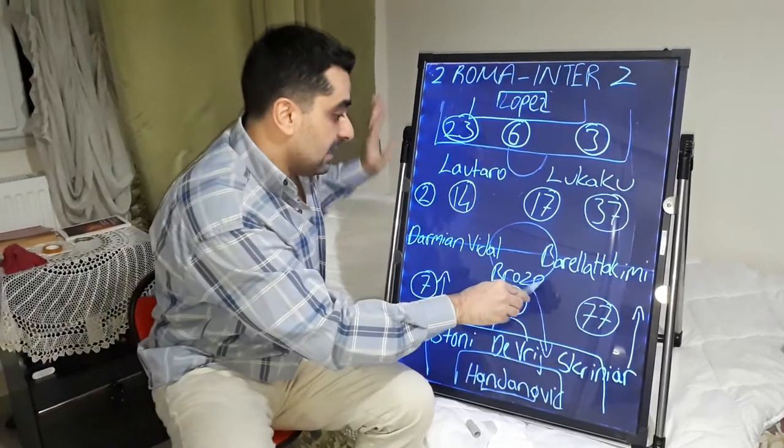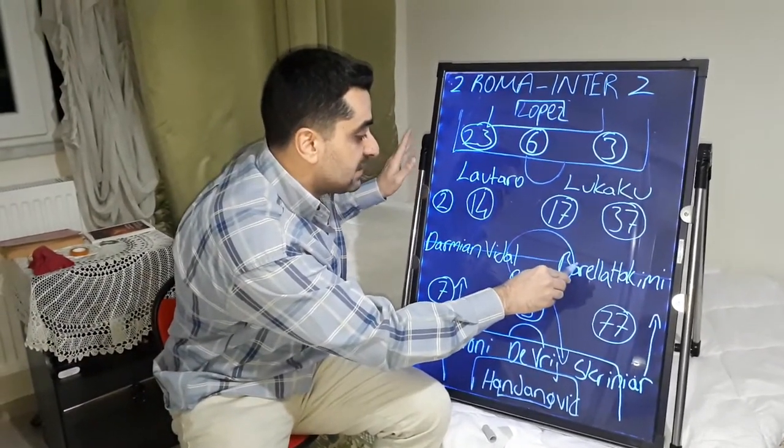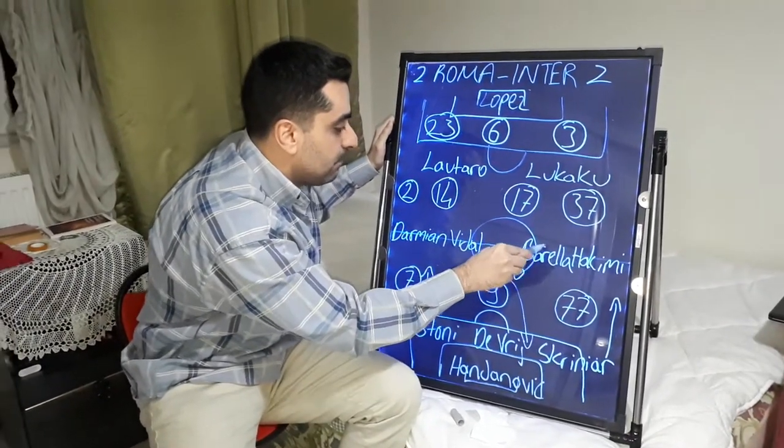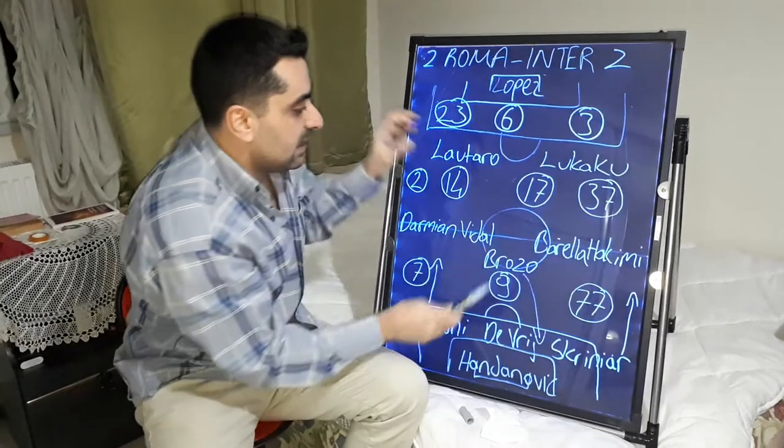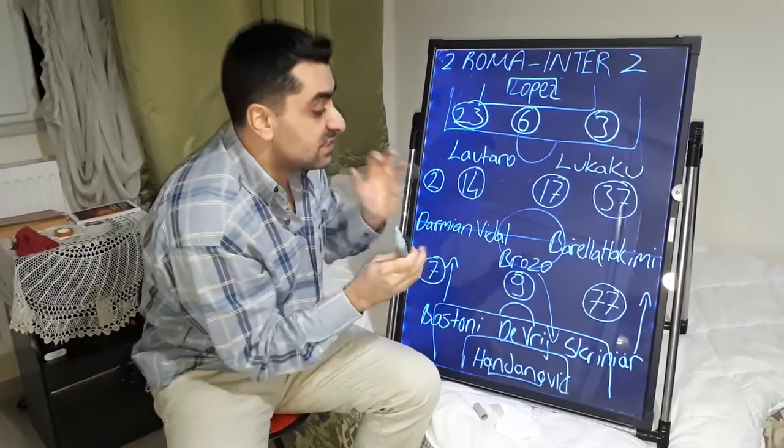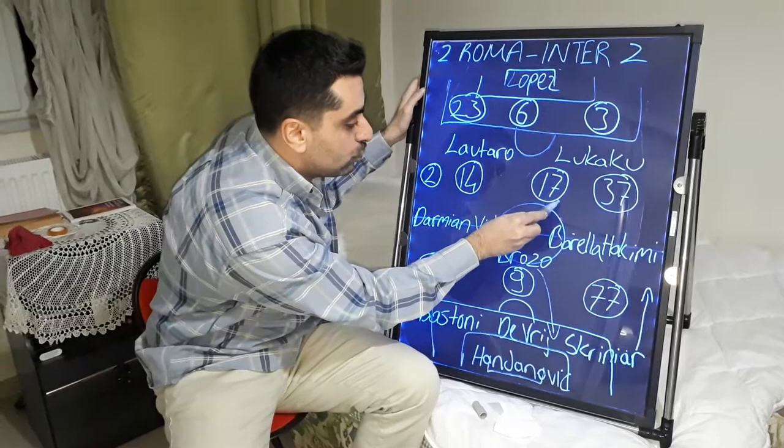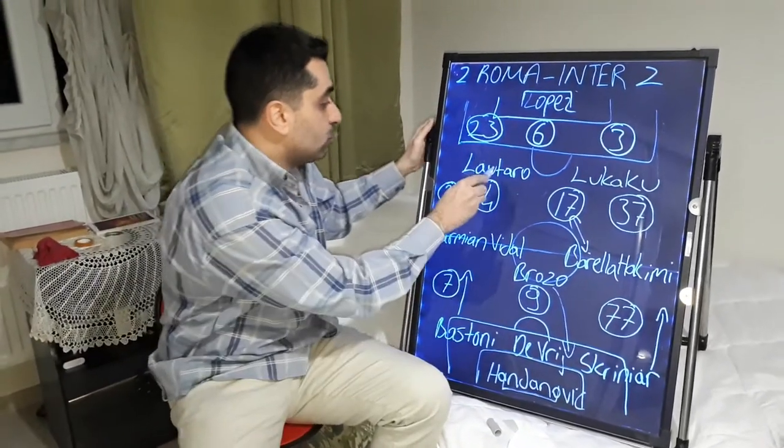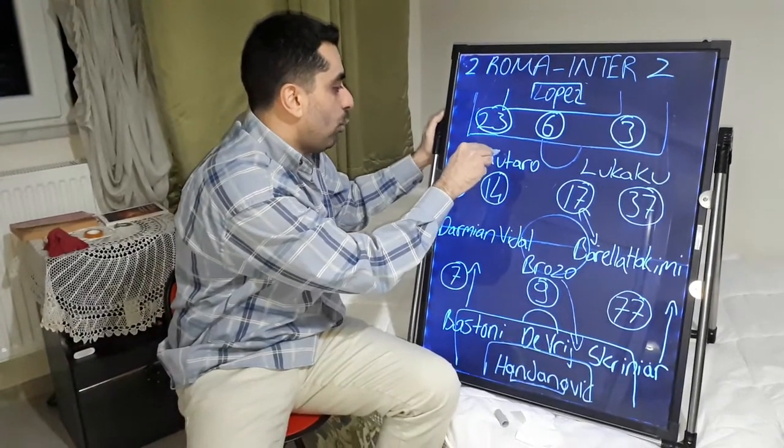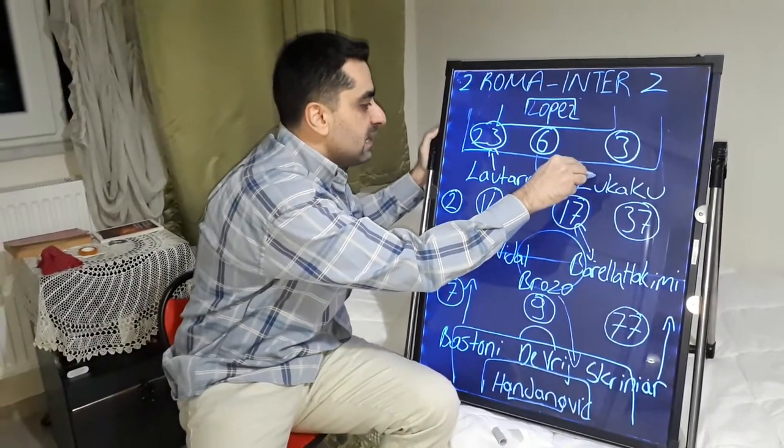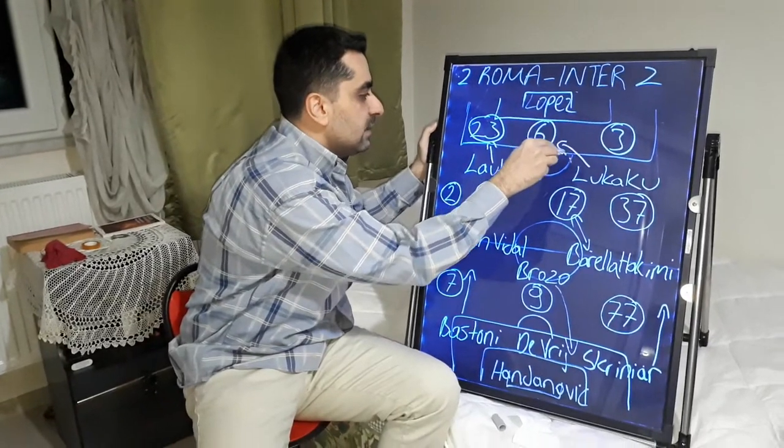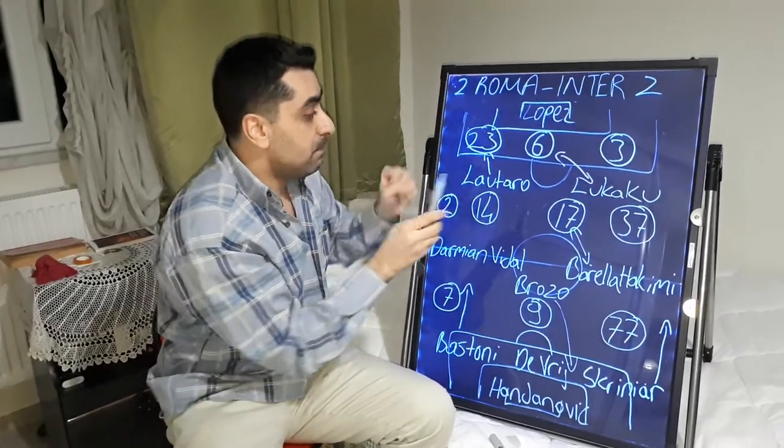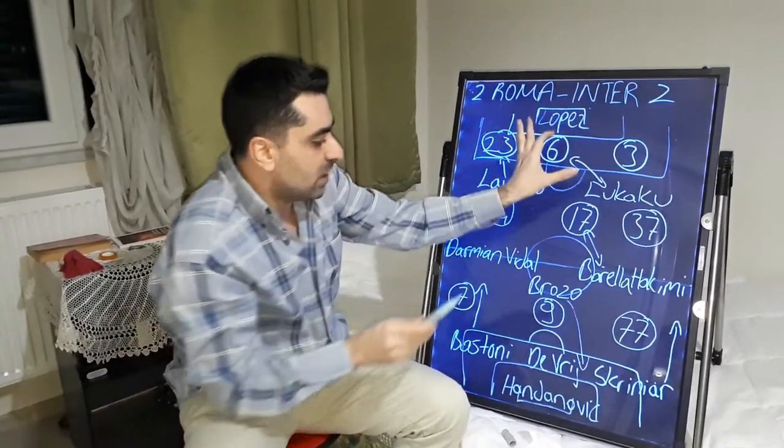And Barella made pressure on Ibáñez and at the same time Veretout. There were bilateral struggles with Veretout and Barella on the midfield. And Lautaro Martinez made press on Mancini, Lukaku made press on Smalling. There were so many bilateral struggles between Smalling and Romelu Lukaku.